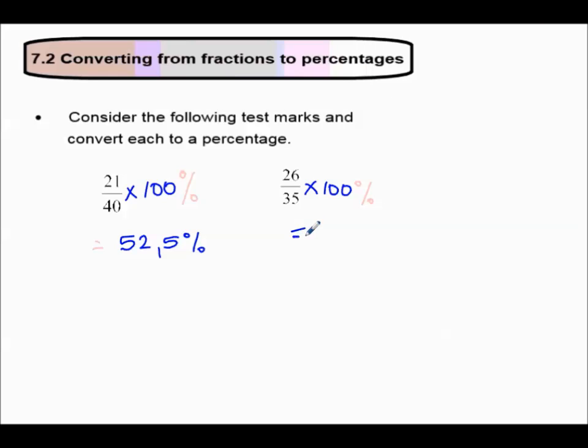So that will equal 74.2857, and so on. Don't forget your unit. Your unit is a percentage. Go back to the question and see how many places you have to round off to. In this case, it's a test mark, so we're going to round off to one decimal place. The neighbor is above 5, so rounded off will be 74.3 percent.